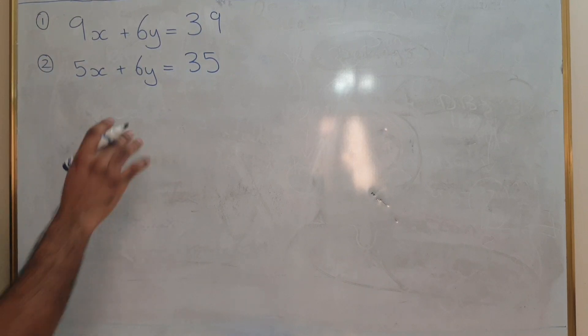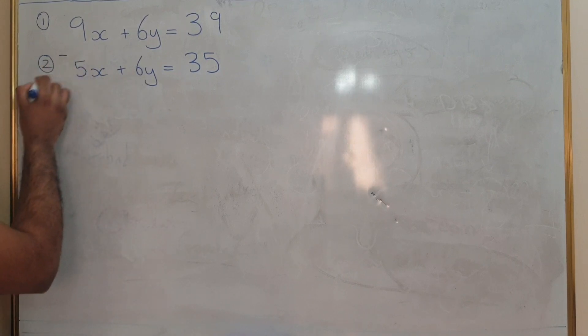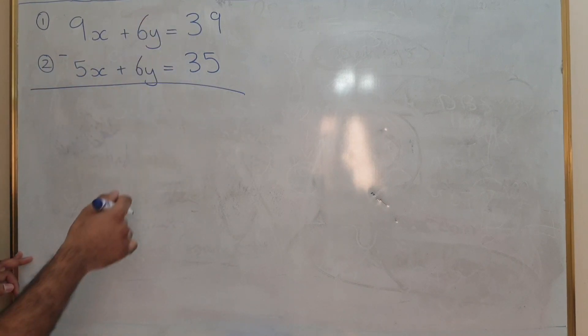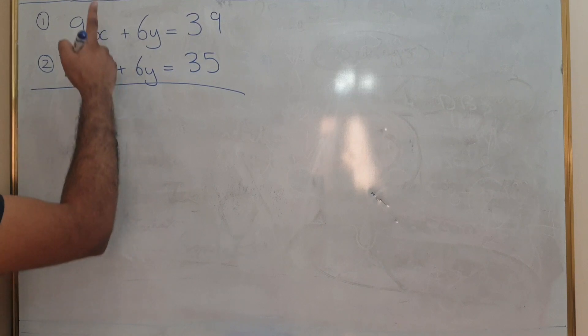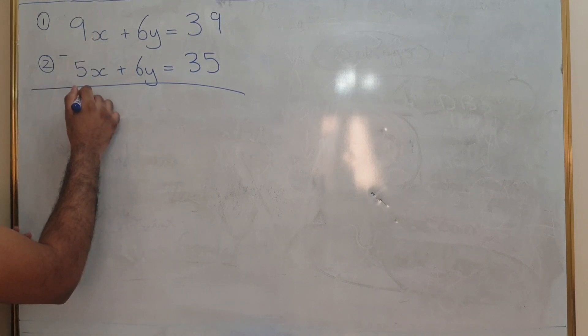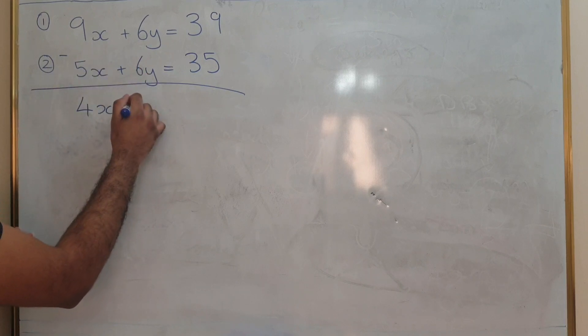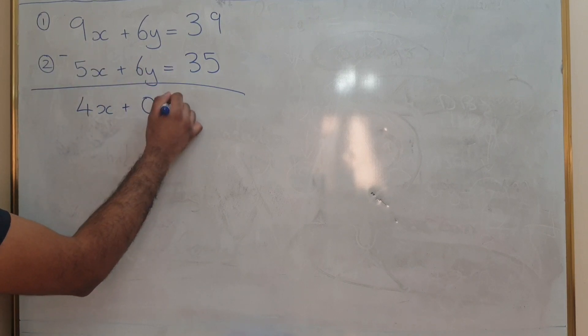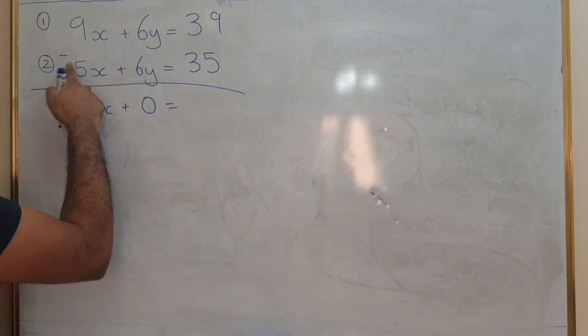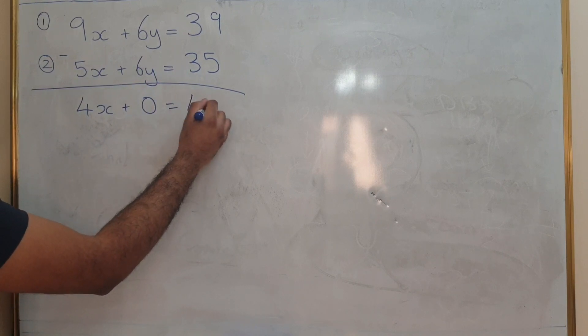When you've got the same sign you are going to subtract one equation away from the other. So we're going to do 9x minus 5x which is 4x. 6y minus 6y is 0 equals 39 minus 35 which is 4.